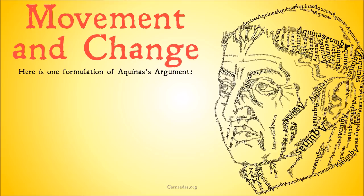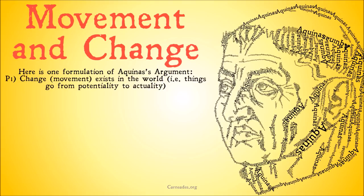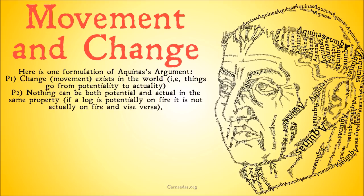Let's take a look at one formulation of the argument. Premise one: change or movement exists in the world — things go from potentiality to actuality. This is at least a commonsense statement that most people, other than perhaps a skeptic, might agree with. Yes, things change in the world: my water gets warmer, parts turn into cars, and so on. Premise two: nothing can be both potential and actual in the same property.